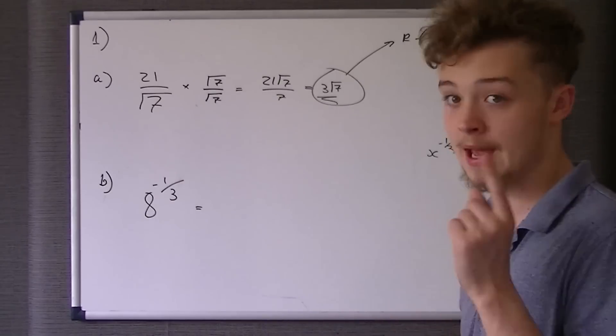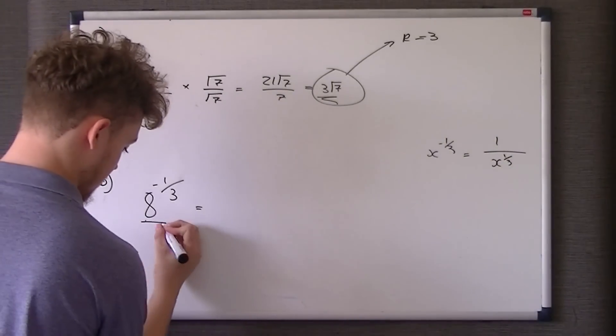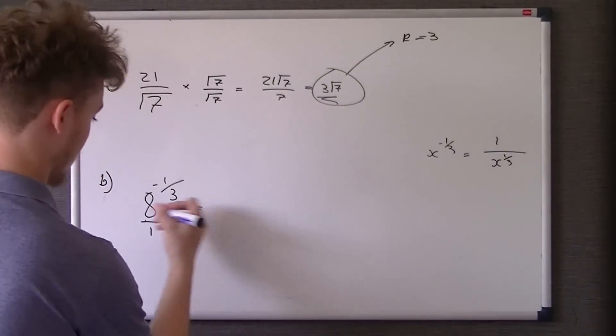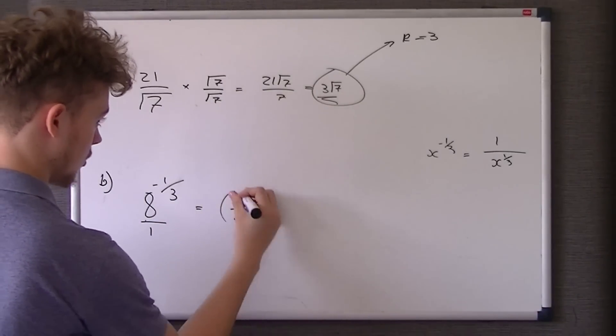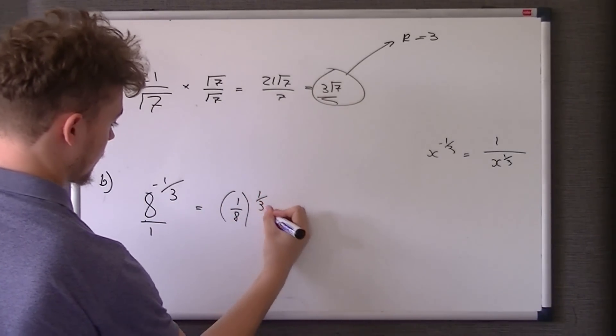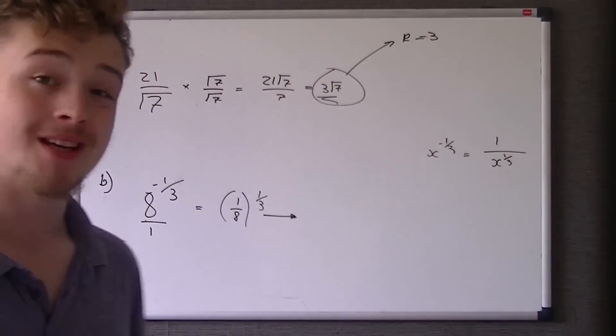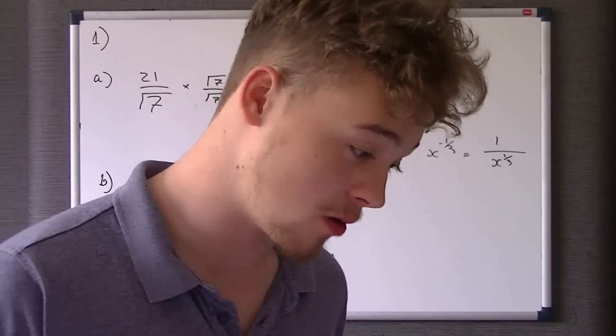So we're going to do a similar thing here. However, because this is essentially 8 over 1, when we flip the fraction, we get 8, and that 8 is all to the power of a third. So in other words, the bottom number is the power, what you cube it to.